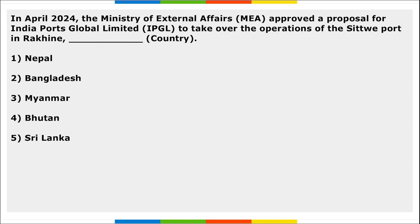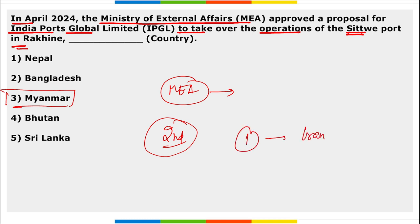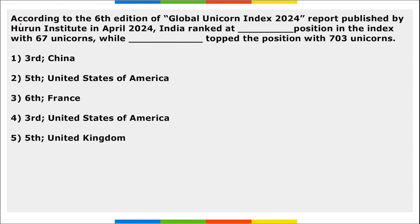In April, the Ministry of External Affairs approved a proposal for India Ports Global Limited to take over the operations of Sittwe Port in Rakhine, which is located in Myanmar. This will be the second foreign port operated by India. The first port is Chabahar Port in Iran, and now Sittwe Port will be the second port operated by India outside India.